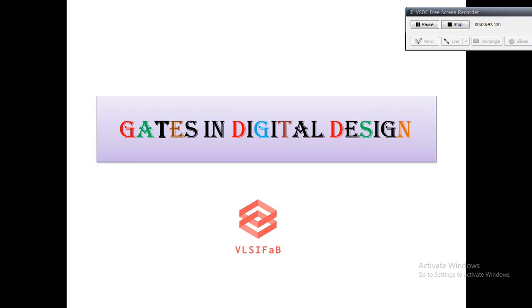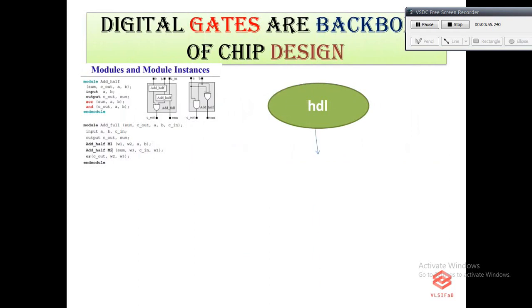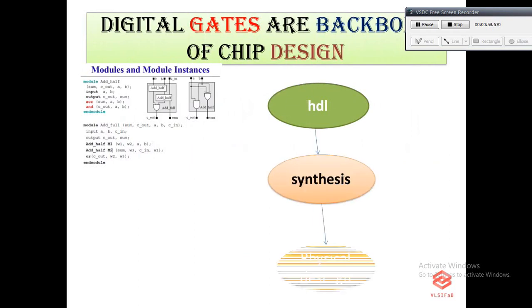Let's start the video. We will discuss how gates are represented in different steps of the VLSI flow. Any logic that contains logic gates is always written in HDLs such as Verilog or VHDL. For example, a full adder coded in Verilog or VHDL is then synthesized using a Cadence or Synopsys synthesis tool such as Genus or Design Compiler. I have already given detailed synthesis videos on my channel. The synthesis output is a gate-level netlist containing all gate-level information and the connections between gates.